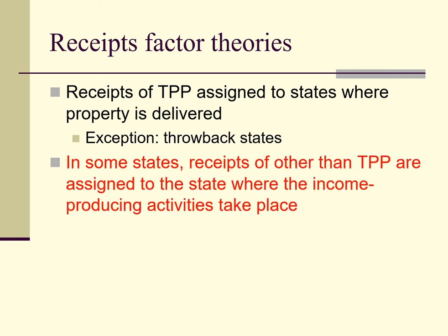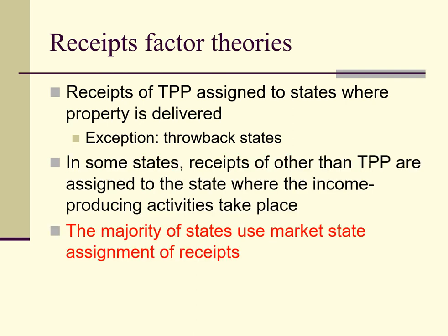In some states, receipts from sales of tangible personal property are assigned to the state where the income-producing activities take place. For example, WebCo has all of its activities including its web server in State A and sells online services. Because all of the activities associated with the receipts from sales of online services take place in State A, all of the receipts are assigned to that state regardless of where customers are located. The majority of states, however, assign receipts from sales of other than tangible personal property to the states where customers are located. Such states are referred to as market states, and this assignment is referred to as market state assignment or market state sourcing of receipts.